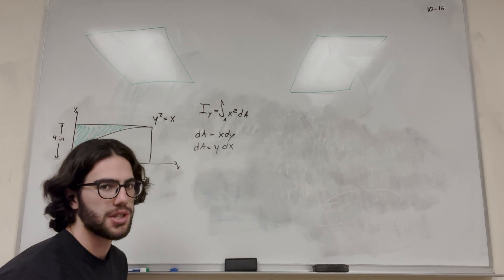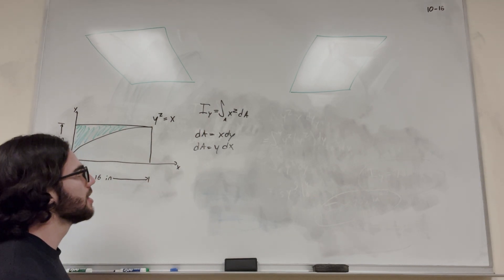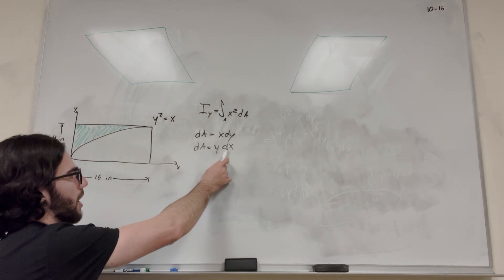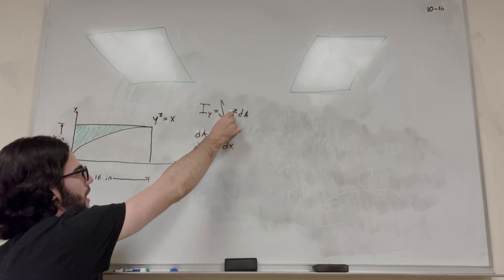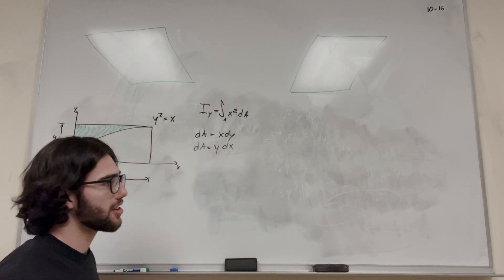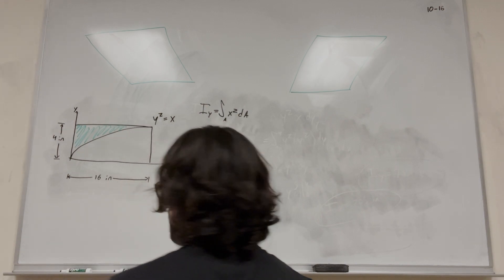Either one of these works, but we want to choose the right one that's going to make it easiest for us. In this case, when I do these problems, I find it's easiest to use dx because we already have x squared, so using dx will make the integral easier with less substitution.